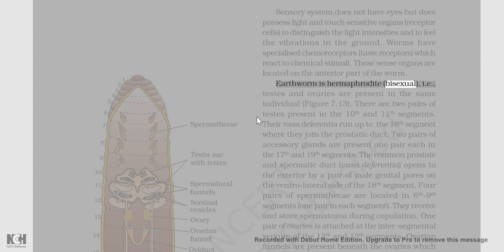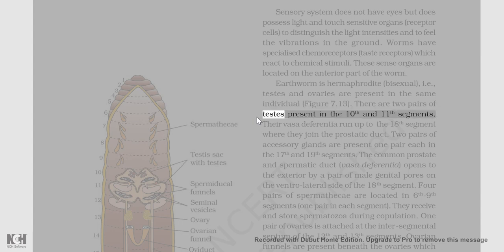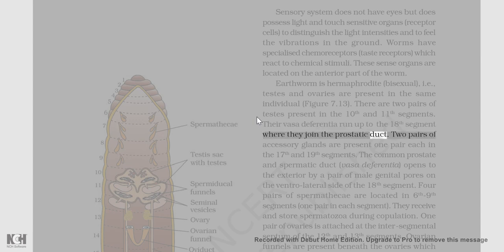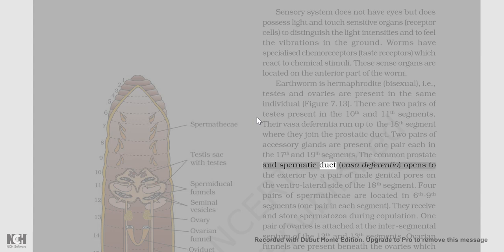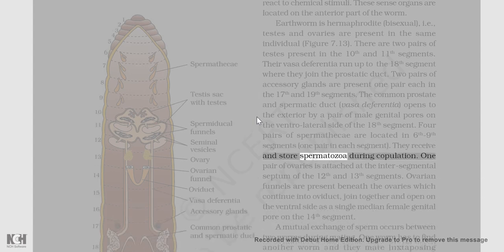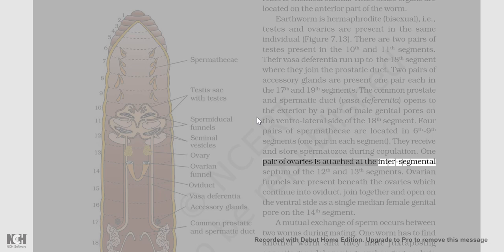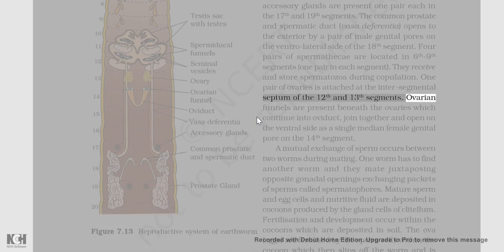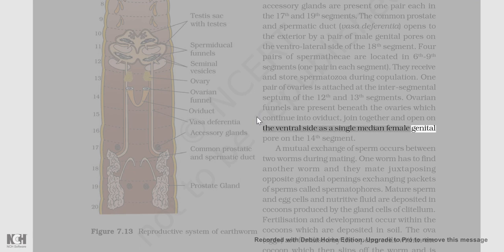Earthworm is hermaphrodite (bisexual), i.e., testes and ovaries are present in the same individual (figure 7.13). There are two pairs of testes present in the 10th and 11th segments. Their vasa deferentia run up to the 18th segment where they join the prostatic duct. Two pairs of accessory glands are present, one pair each in the 17th and 19th segments. The common prostate and spermatic duct (vasa deferentia) open to the exterior by a pair of male genital pores on the ventrolateral side of the 18th segment. Four pairs of spermathecae are located in the 6th to 9th segments, one pair in each segment. They receive and store spermatozoa during copulation. One pair of ovaries is attached at the intersegmental septum of the 12th and 13th segments. Ovarian funnels are present beneath the ovaries which continue into the oviduct, join together and open on the ventral side as a single median female genital pore on the 14th segment.